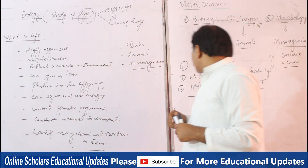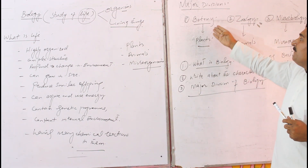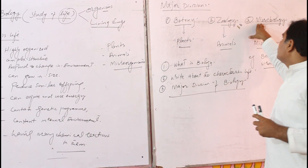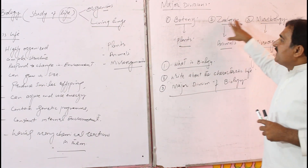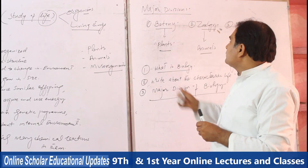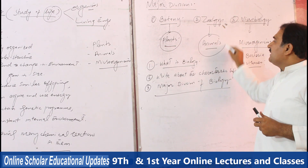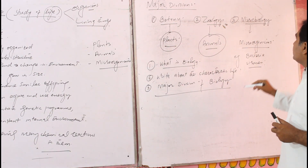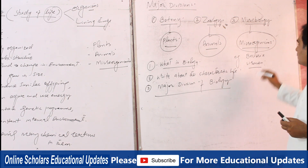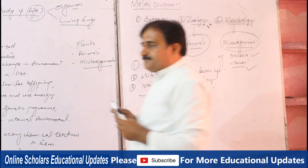The third major topic consists of three major divisions: one of them is botany, second is zoology, and third is microbiology. Botany is related with the study of plants, zoology is related with the study of animals, and microbiology is the study of micro-organisms, especially the study of bacteria and viruses. Thank you very much.